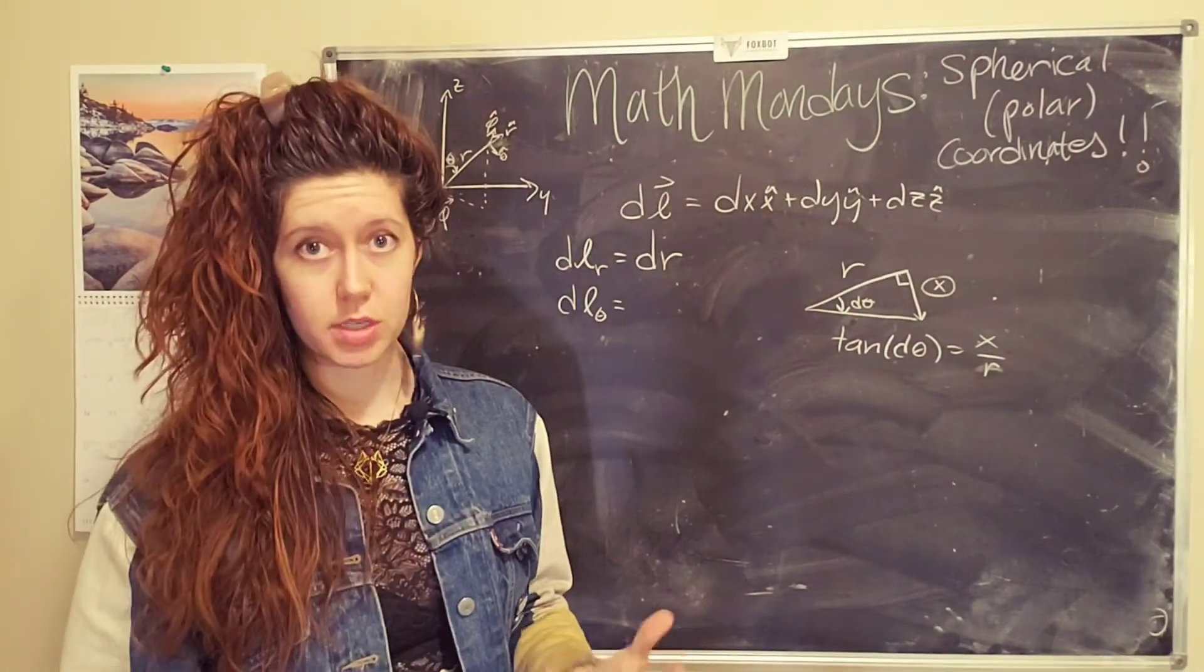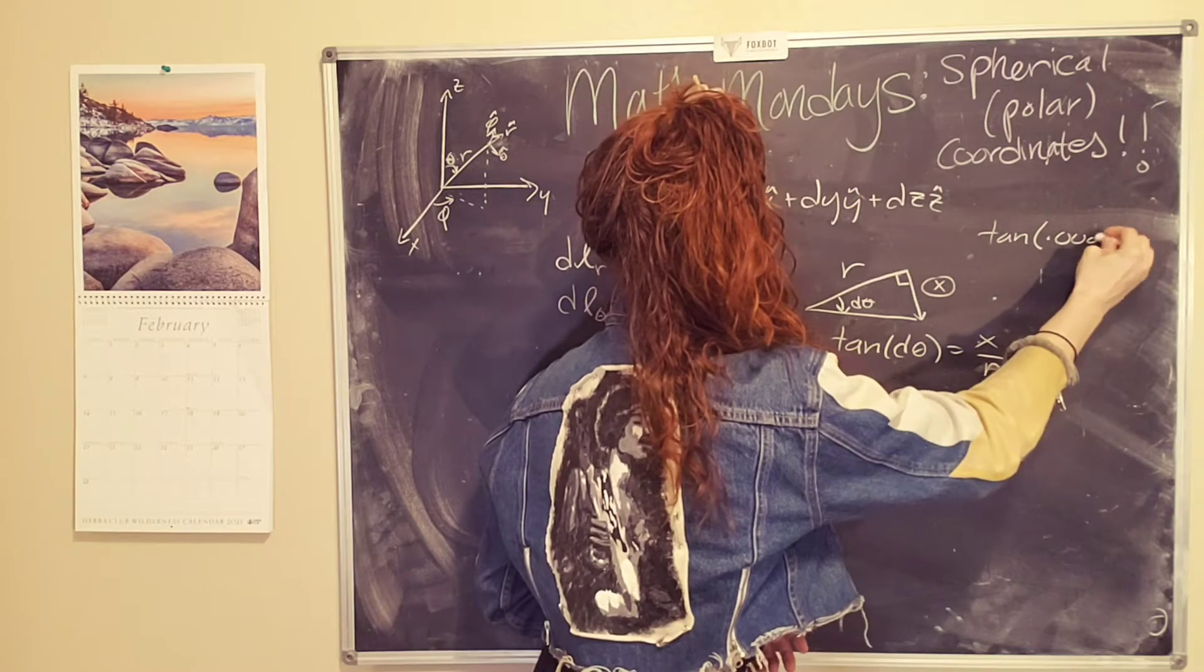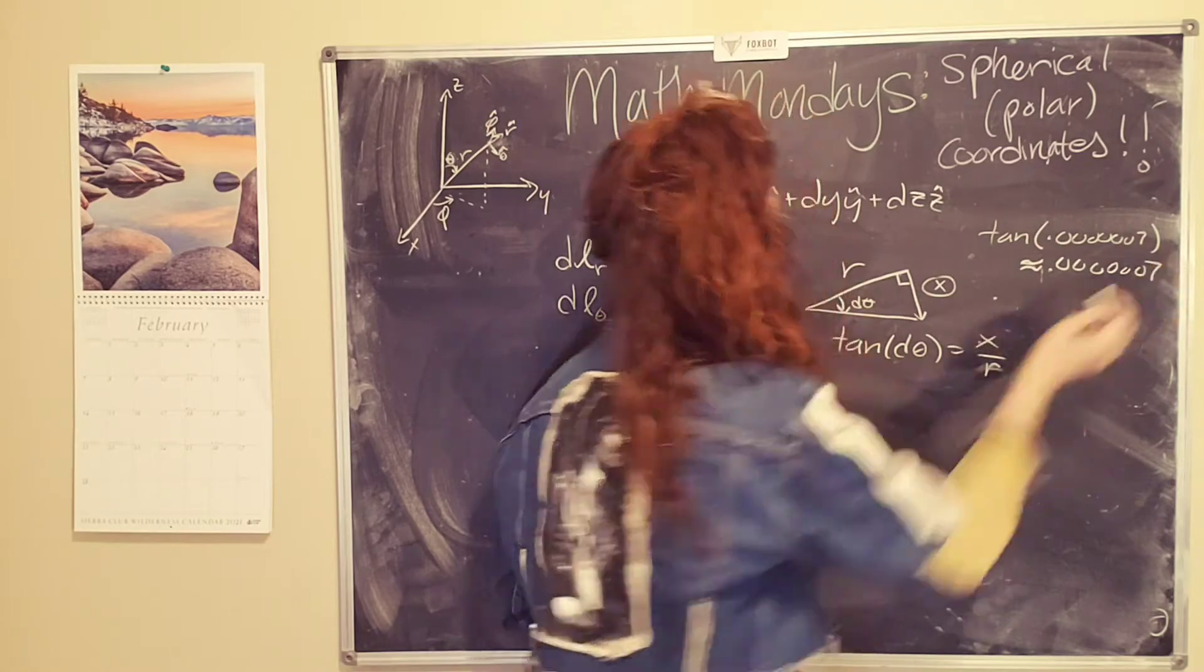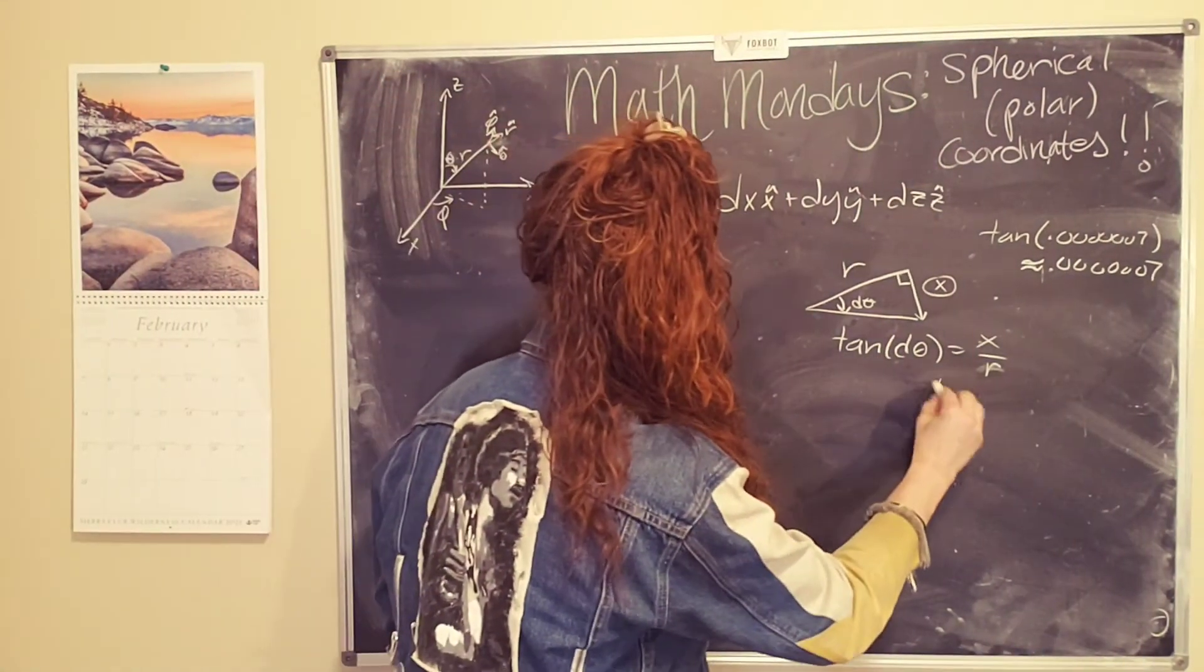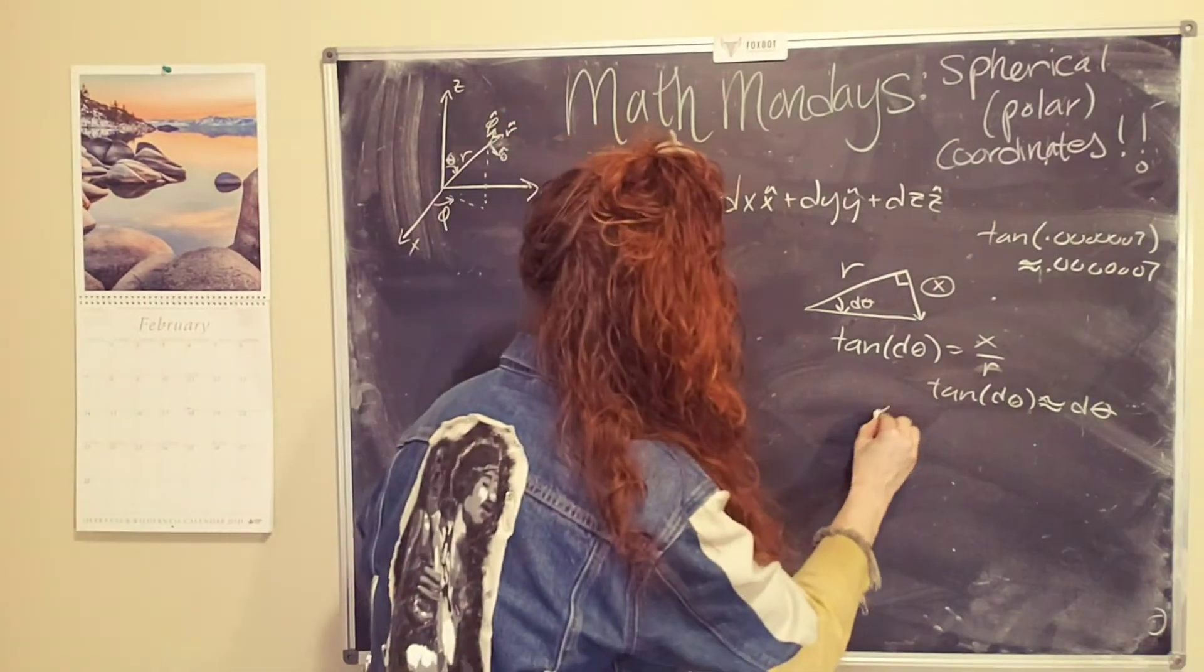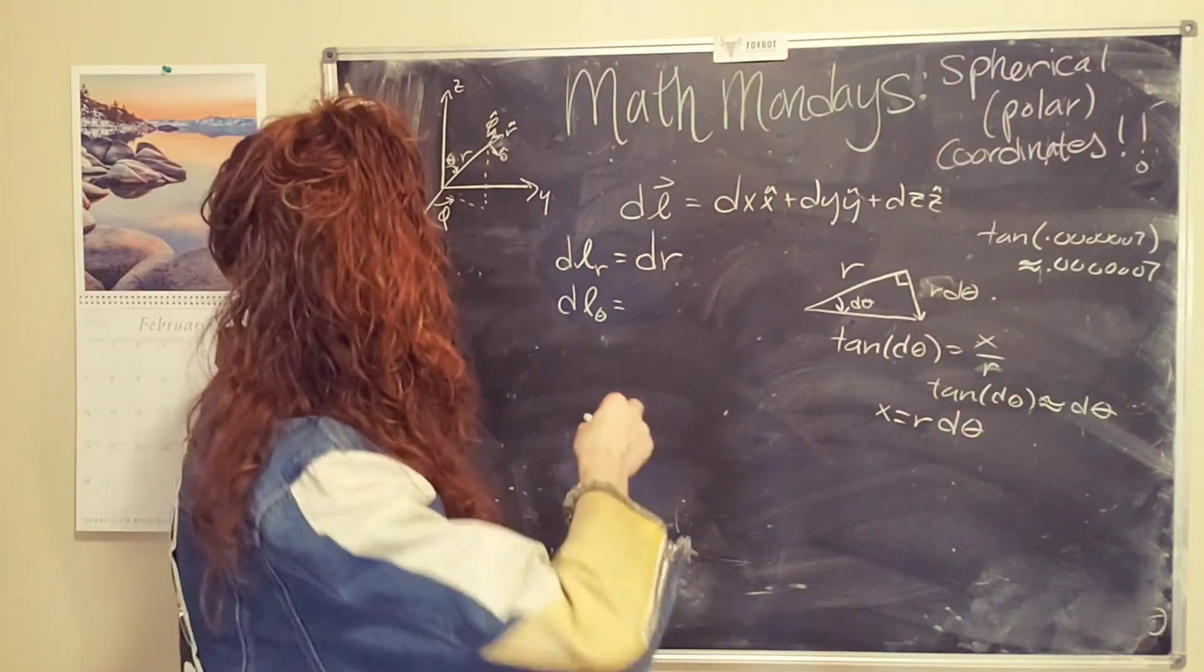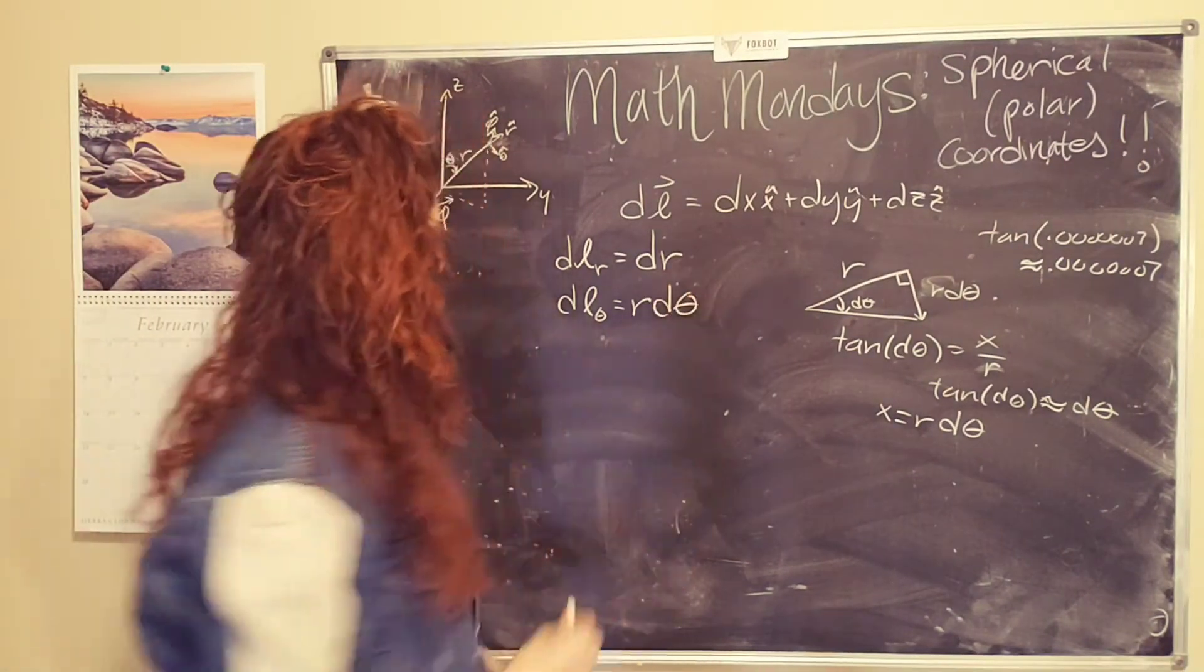But before I do that, the tangent of a very, very, very small number is just equal to that number. So if I have tangent of 0.0000007, I'm going to get approximately 0.0000007. So basically, cause D theta is by definition a teeny, teeny tiny number, tangent of D theta is approximately equal to D theta. Pretty cool. Okay. So now we know that X equals R times D theta. Boom. So this distance here is R D theta. Super cool. I love how all of these different math disciplines come together. Geometry can be really powerful. So we get R D theta. Boom.